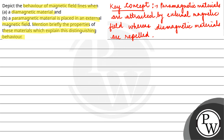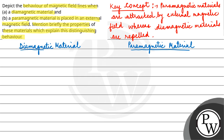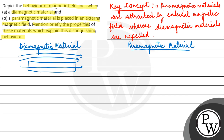We have two materials — diamagnetic and paramagnetic. When they are placed in an external magnetic field, their behavior differs. If we talk about diamagnetic material, in this case most of the magnetic field lines will not pass through the diamagnetic material — the maximum field lines will not pass through the material.